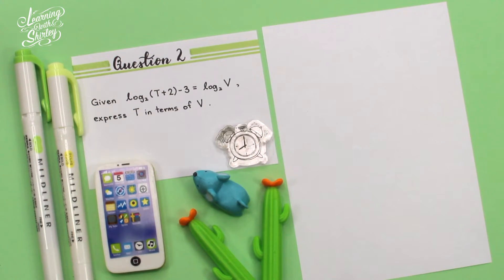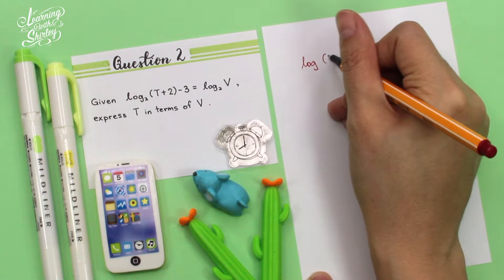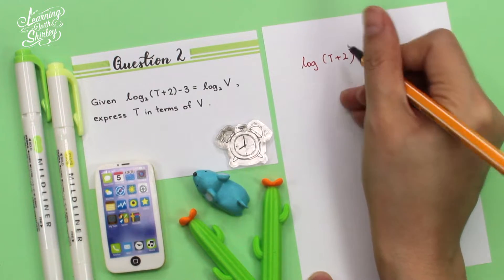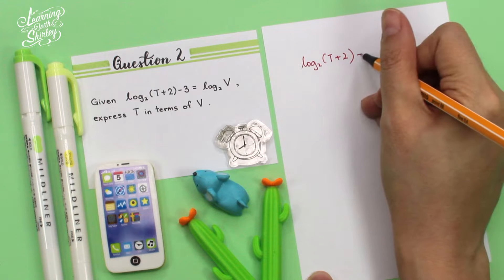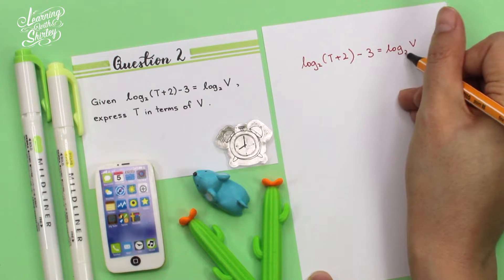For question 2, given log base 2 of (t + 2) minus 3 equals log base 2 of v, express t in terms of v. Okay, firstly, I'm going to write down the question.